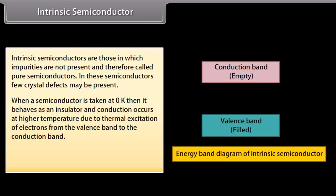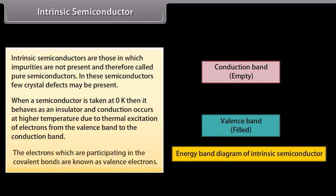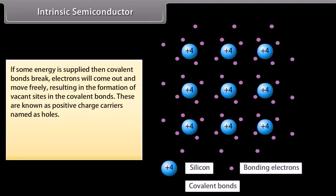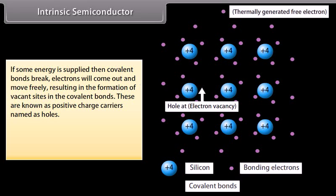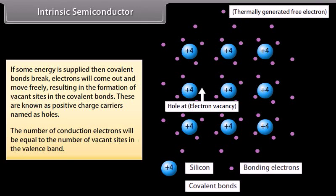Consider silicon, which has four valence electrons. In order to gain stability, it has to make four covalent bonds. The electrons participating in covalent bonds are known as valence electrons. If some energy is supplied, the covalent bonds break. Electrons come out and move freely, resulting in the formation of vacant sites in the covalent bonds. These are known as positive charge carriers called holes. The number of conduction electrons equals the number of vacant sites in the valence band.